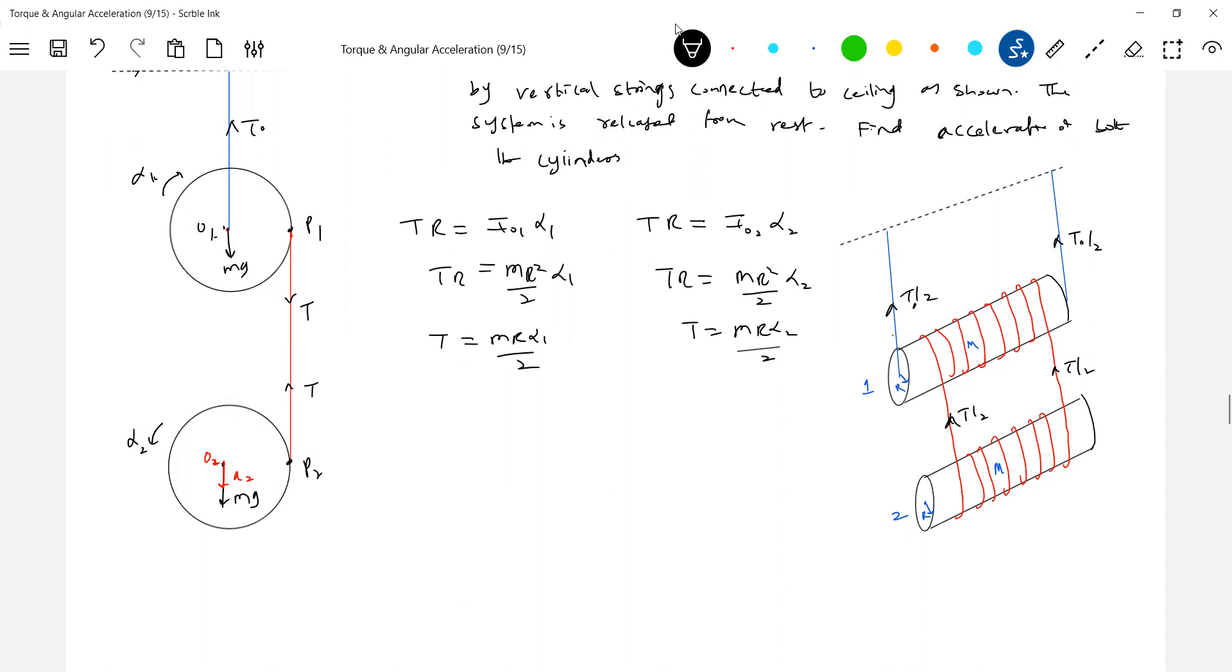Sir, if the body is not symmetrical, then can we do it? Sir, even then also, even then also. mg minus T is equal to m·a2. This is one equation I wrote. So how many unknowns are there? α1, α2, T, and a2. I need one more equation.